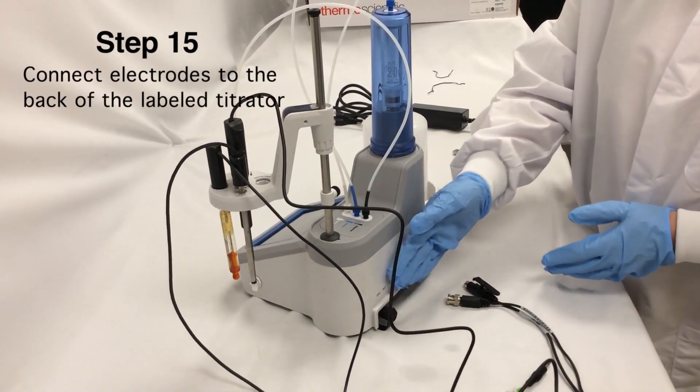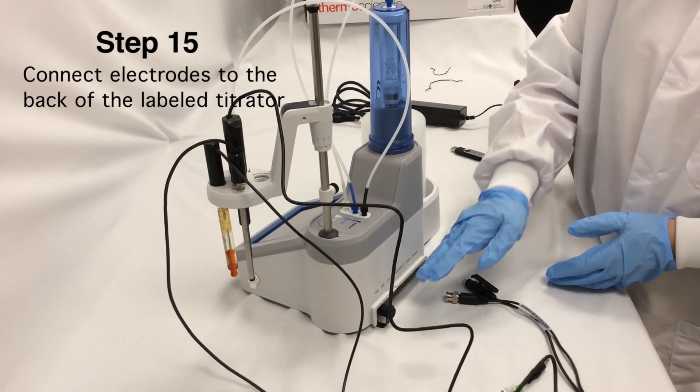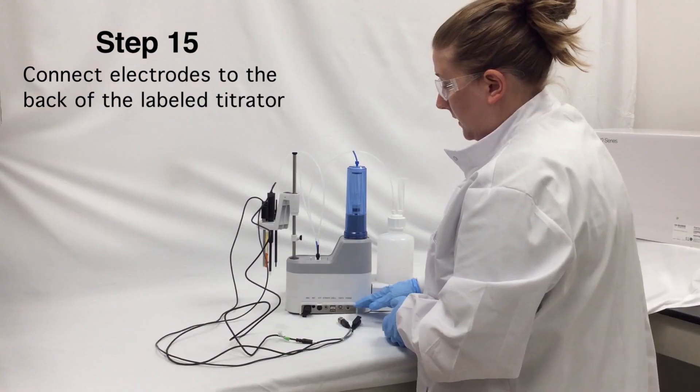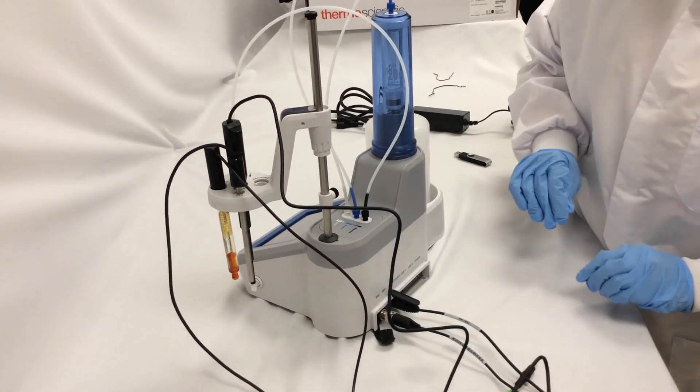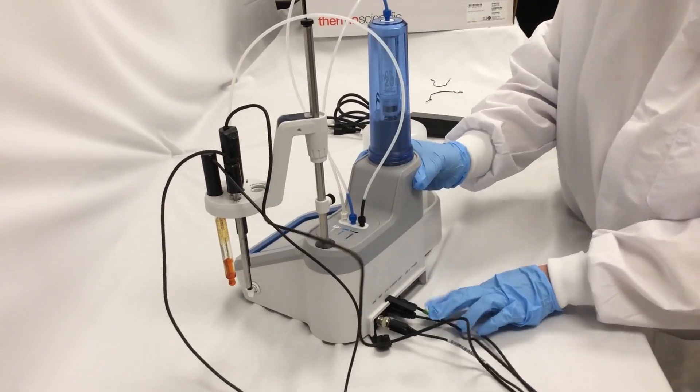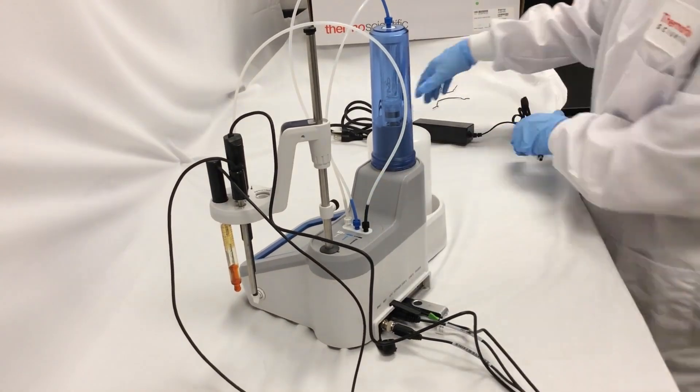Connect the electrodes that were just placed in the holder to the back of the titrator. The connections are clearly labeled, so just follow the connections. Finally, connect the power cord.